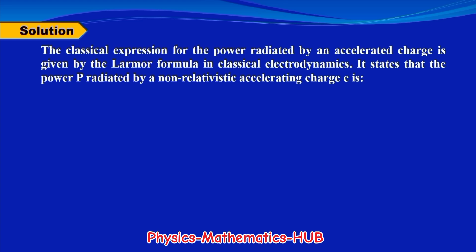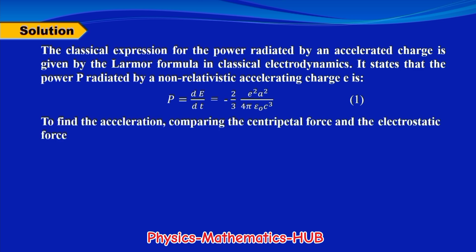The classical expression for the power radiated by an accelerated charge is given by the Larmor formula in classical electrodynamics. It states that the power P radiated by a non-relativistic accelerating charge e is: P = dE/dt = minus (2/3) × e² a² divided by 4π ε₀ c³. This is equation 1. Here e is the charge on the electron or proton, ε₀ is the permittivity of free space, c is the speed of light, and a is the acceleration of the electron revolving around the proton.